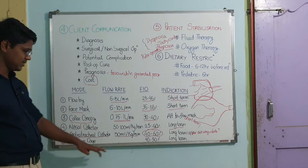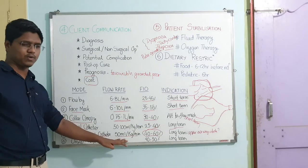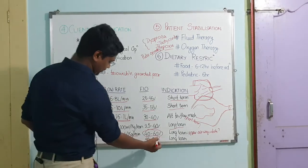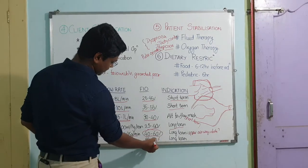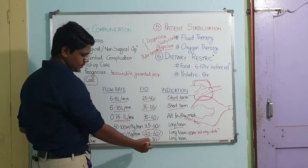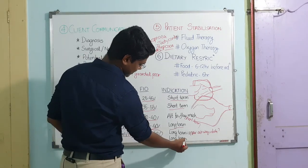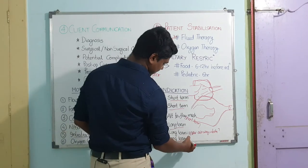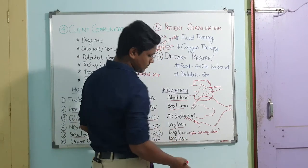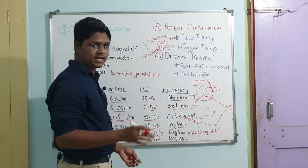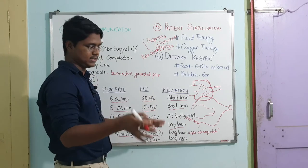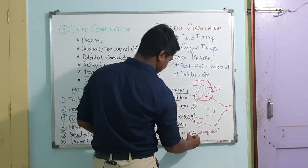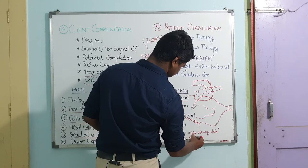The last one is oxygen cage. There is no specific flow rate because it is a cage environment where oxygen is provided inside. It also has a high FiO2 of 40 to 50% and is a long-term oxygen delivery system. The disadvantage is you have very limited access to the patient because the animal is inside the cage, so you cannot manipulate the patient — restricted access.